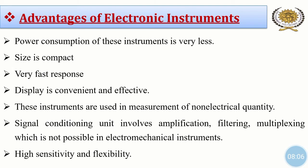Now, advantages of electronic instruments. As previously we have seen, mechanical or electromechanical instruments are replaced by electronic instruments because of the many advantages they offer. These advantages are: power consumption is very less as compared to electromechanical instruments; size is compact; very fast response; display is convenient and effective. These instruments are used in measurement of non-electrical quantities like temperature, pressure, etc. Signal conditioning involves amplification, filtering, and multiplexing, which is not possible in electromechanical instruments. These instruments also have high sensitivity and flexibility.